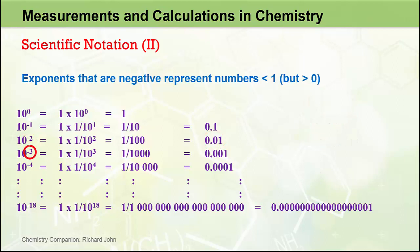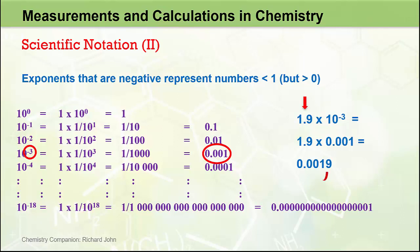10 to the minus 3 represents 1 over 10 to the 3, or 1 over 10 cubed, which is 1 over 1000, which in decimal form is 0.001. So the number 1.9 times 10 to the minus 3 in scientific notation represents 1.9 times 0.001, which is 0.0019. In this case, the decimal place in the coefficient has been moved three places to the left, corresponding to an exponent of negative 3. Hopefully you're getting the idea now with respect to how to deal with negative exponents.